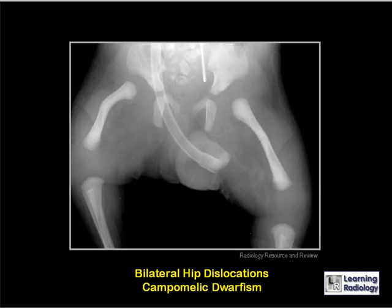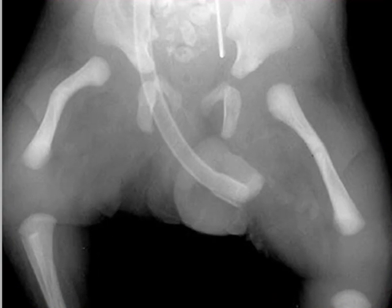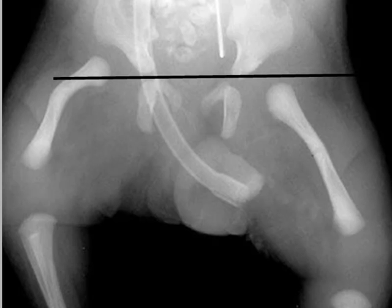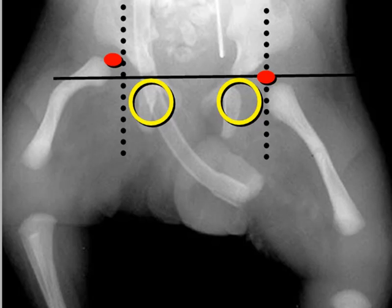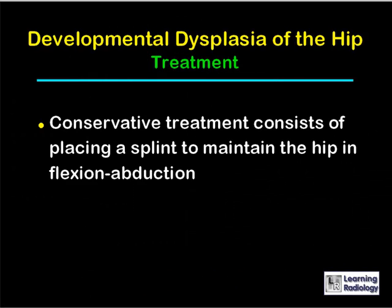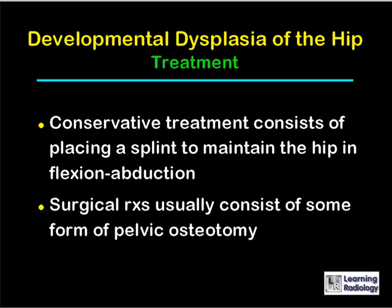Here is another child with bilateral hip dislocations who has campomelic dwarfism. Drawing the horizontal Y line and dropping two perpendiculars, the femoral heads, were they ossified, would not lie within the lower inner quadrants — so both heads are dislocated. Treatment for developmental dysplasia of the hip consists conservatively of placing a splint to maintain the hip in flexion and abduction. Surgical treatment usually consists of some form of pelvic osteotomy.